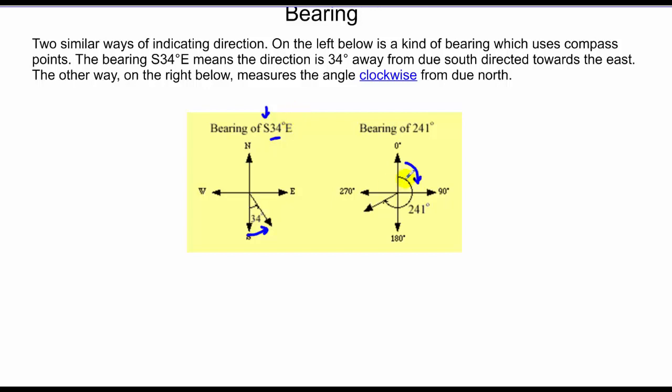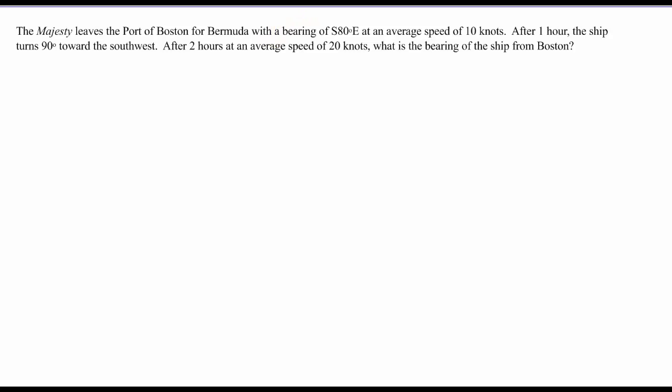So let's do a problem involving bearing. A boat leaves from the port of Boston, and it has a bearing from Boston of south 80 degrees east. So here's my 80, and this is 10, and it's going to travel at 10 knots for an hour. So this length, actually, is 10.